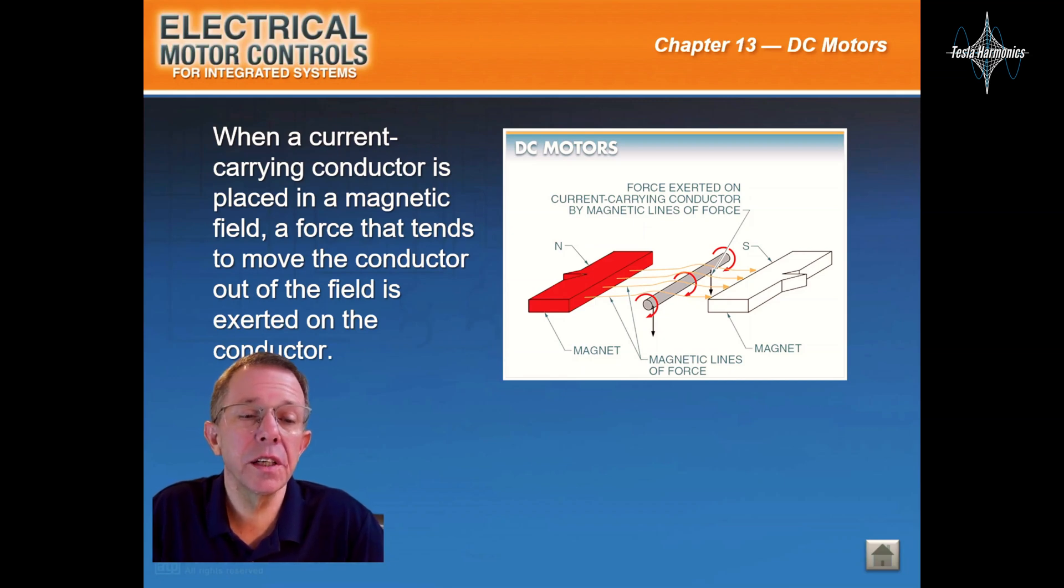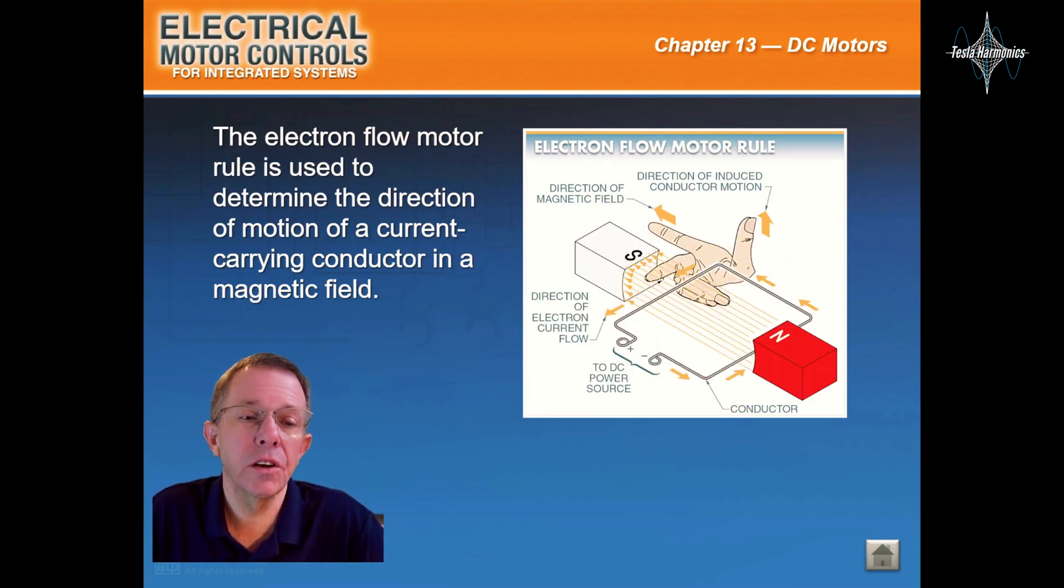When a current carrying conductor is placed in a magnetic field, a force that tends to move the conductor out of the field is exerted on the conductor. The electron flow rule is used to determine the direction of motion of a current carrying conductor in a magnetic field.